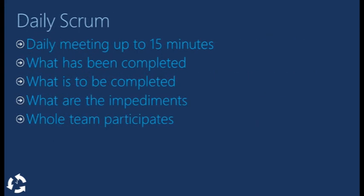The daily Scrum is a short 15-minute meeting when the team discusses what was done in the previous day, what will be done today, and whether there are any impediments that need resolution. The whole team participates in this meeting.